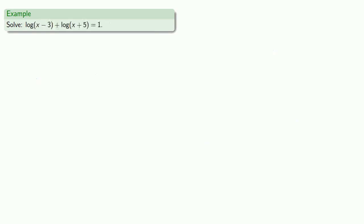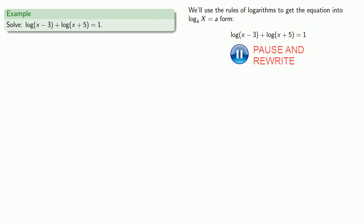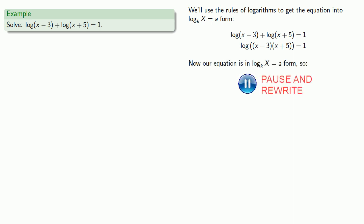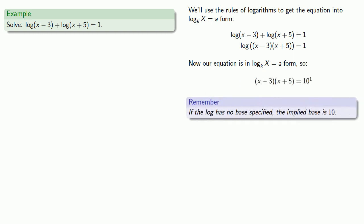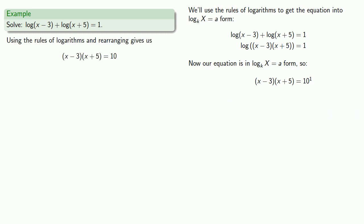So here we have another logarithmic equation, and we want to use our rules of logarithms to get the equation into the log equals something form. So we have the sum of logs, so we can rewrite it as the log of a product. Then we can use the definition of logs to rewrite this, where, remember, if the base isn't stated, we can assume that our base is 10.